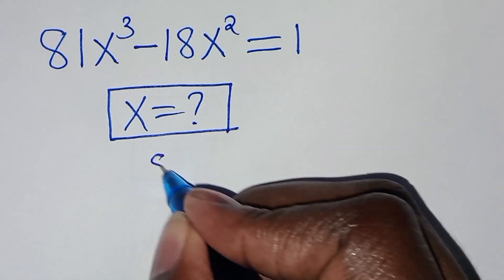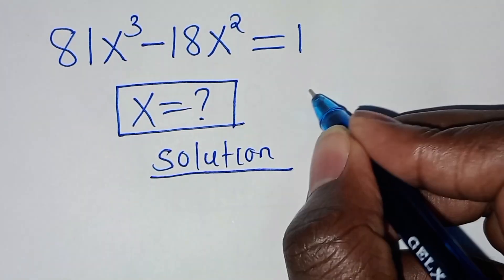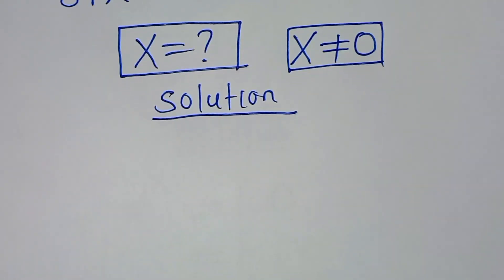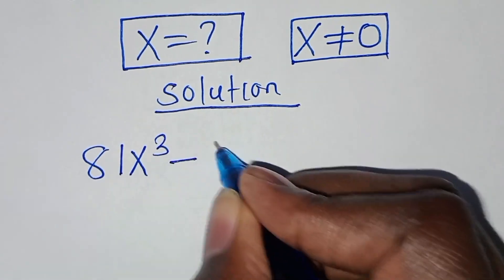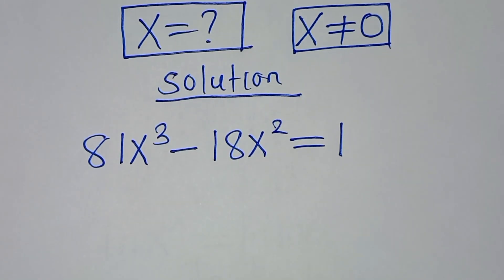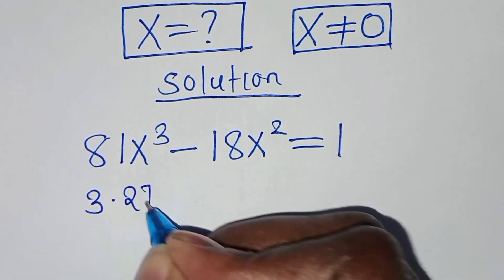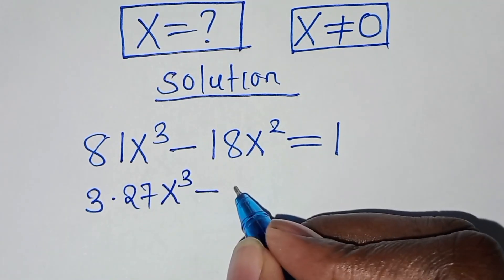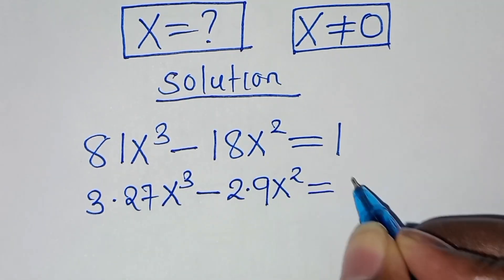Let's present the solution from here. We have that x is not equal to 0. So we have 81x³ minus 18x² equals 1. We can express 81 as 3 times 27 times x³, then minus 18, which we can express as 2 times 9 times x². So this is equal to 1.